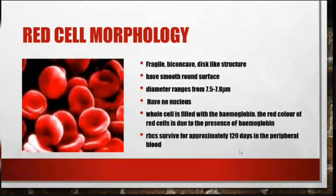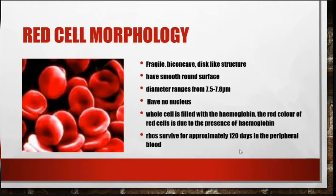Red cell morphology: they are biconcave disc-like structures with a smooth round surface. Diameter ranges from 7.5 to 7.8 micrometers. They have no nucleus and the whole cell is filled with hemoglobin. The red color of the red cell is due to the presence of hemoglobin.